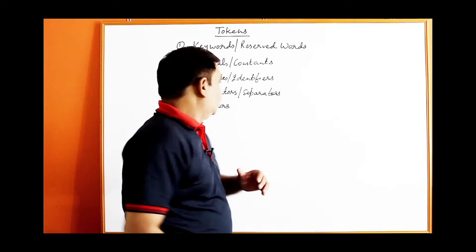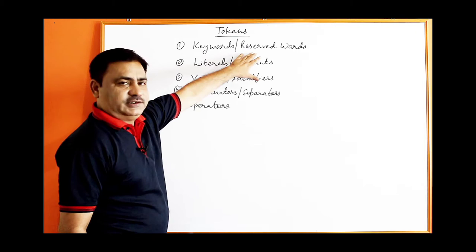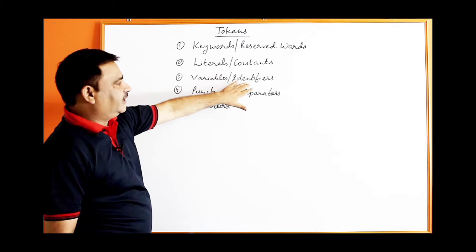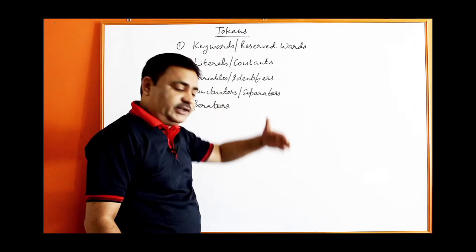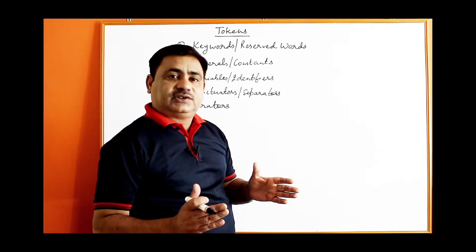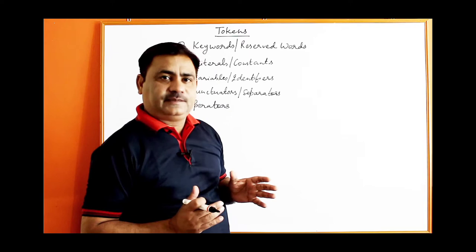First is keywords or reserved words, second literals or constants, third is variables or identifiers, fourth is punctuators or separators, and fifth is operators. First let's discuss keywords. Keywords are words provided by Java which we use while writing programs, and the compiler takes some action when they appear in the program.